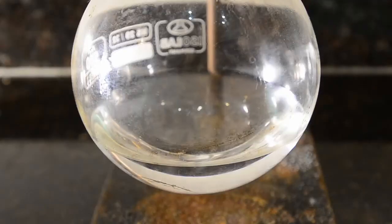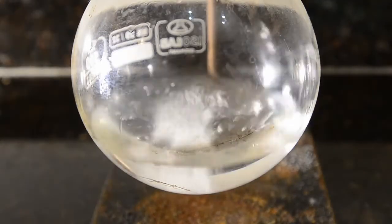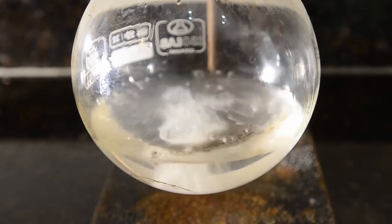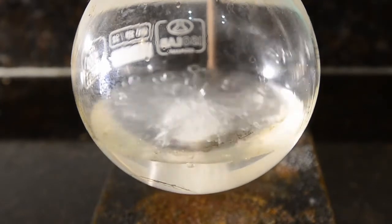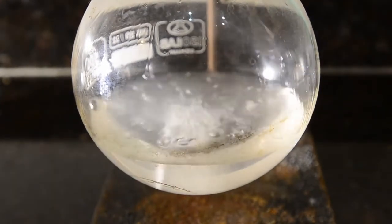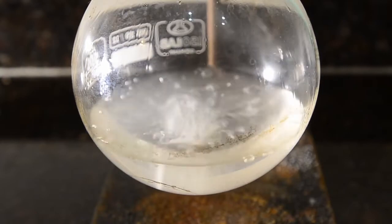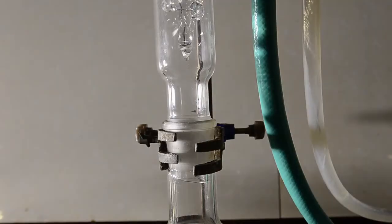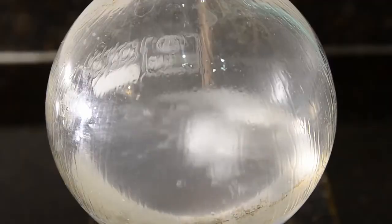Temporarily remove the condenser and add the sodium to the methanol in the flask. It starts to react very rapidly producing hydrogen gas, and the mixture will get hot. Replace the condenser and allow the sodium to react and dissolve.